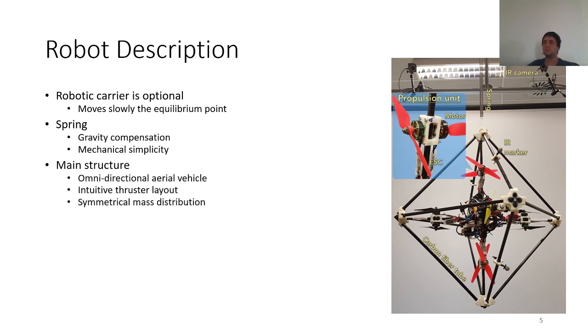The main structure is an omnidirectional aerial vehicle built using carbon fiber tubes, 3D printed bars and some standard drone components. It has six propulsion units positioned with an intuitive layout in order to generate a six degrees of freedom wrench and to have a symmetrical mass distribution.